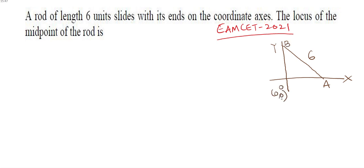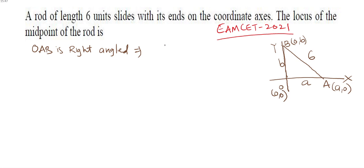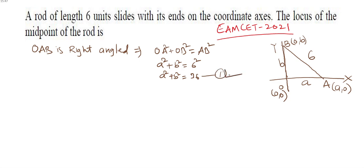The coordinates of origin are (0, 0), capital A is taken as (a, 0), and capital B is (0, b). The distance OA is small a and OB is small b. Triangle OAB is right-angled. Applying Pythagoras' theorem: OA² + OB² = AB², that is a² + b² = 6² = 36.